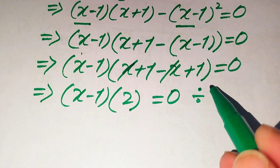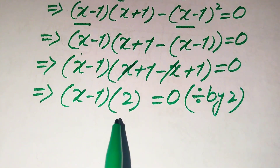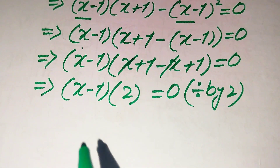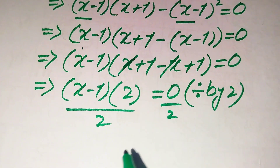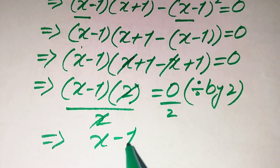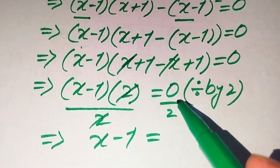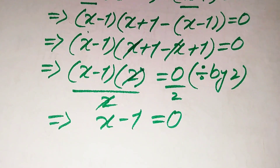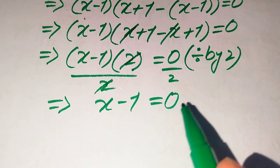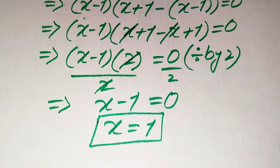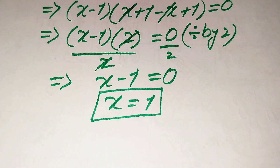We divide both sides by 2 to remove it from the left hand side. This 2 and that 2 cancel, leaving x - 1 equals 0 divided by 2, which is 0. Moving the -1 to the right hand side gives x equals 1. This is the value of x we get from the first method.